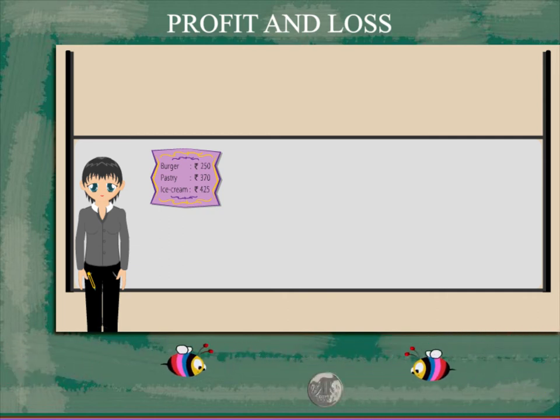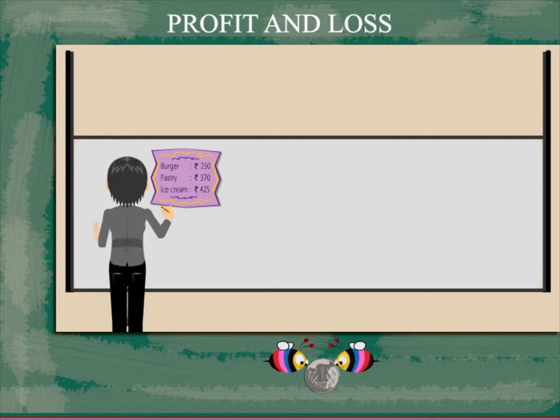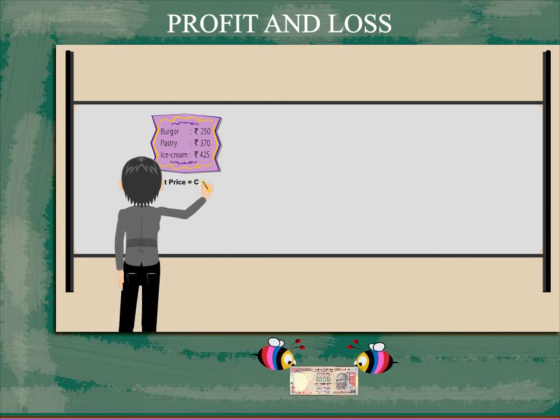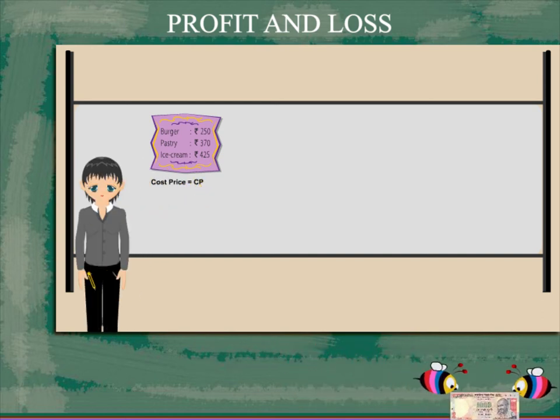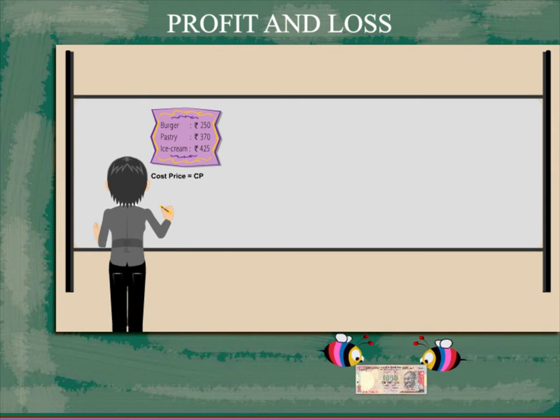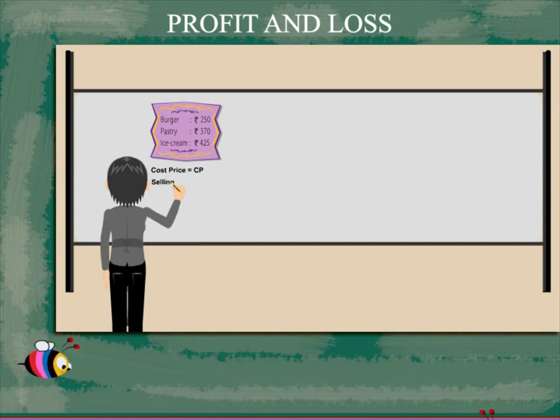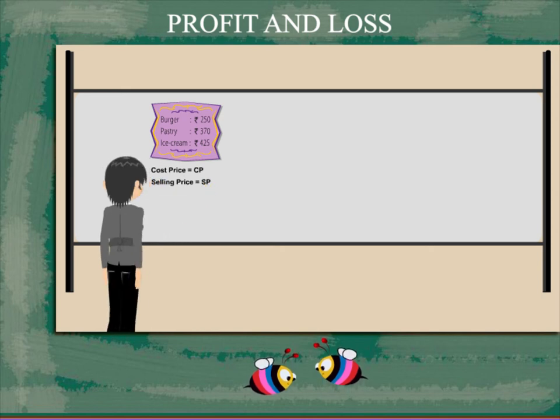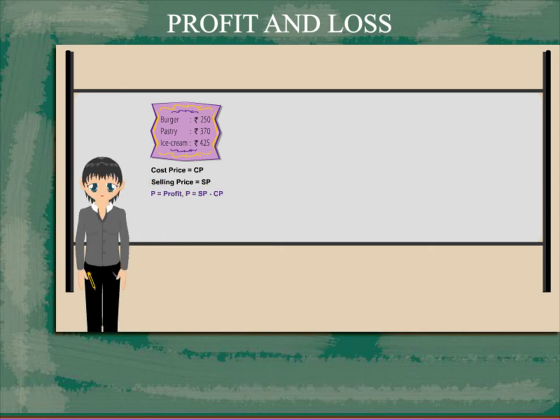Nancy ma'am explains that CP is the cost price, SP is the selling price, and profit is SP minus CP, where SP is greater than CP.